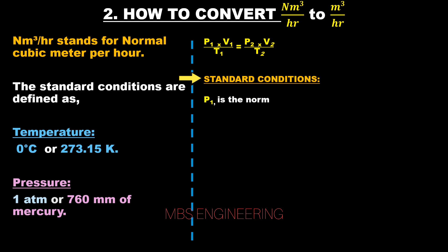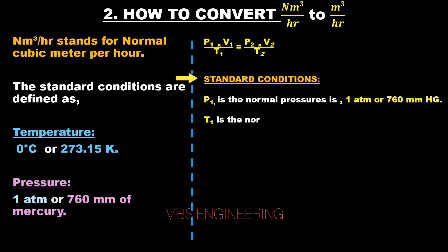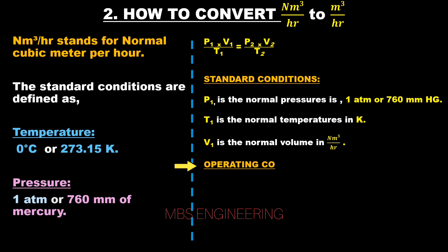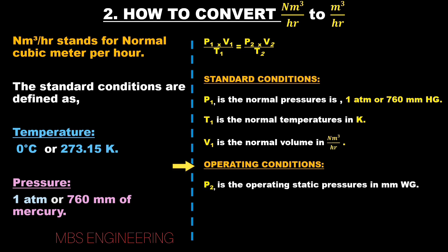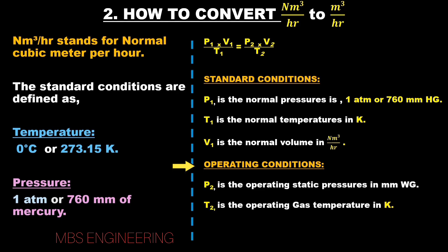The standard conditions are: P1 is the normal pressure, 1 atmospheric pressure or 760 mm of mercury. T1 is the normal temperature in Kelvin. V1 is the normal volume in Nm³/hr. The operating conditions are: P2 is the operating gas pressure in mm of water column. T2 is the operating gas temperature in Kelvin. V2 is the volume of the compressed gas in m³/hr.